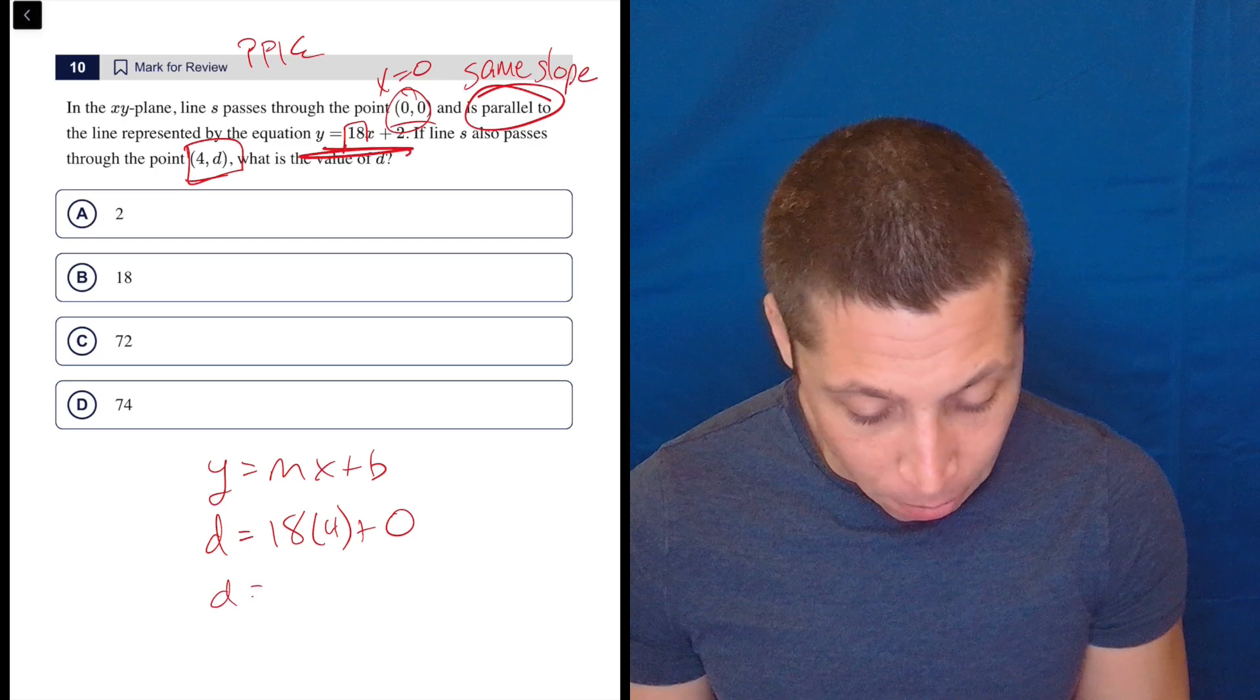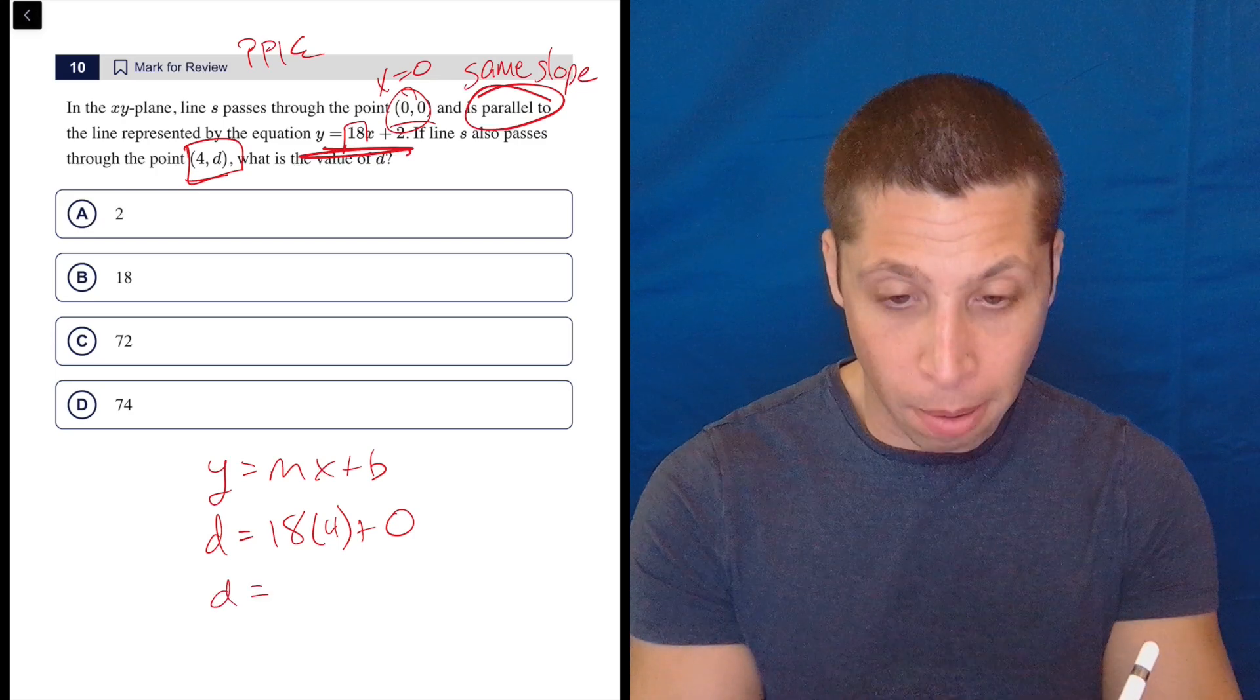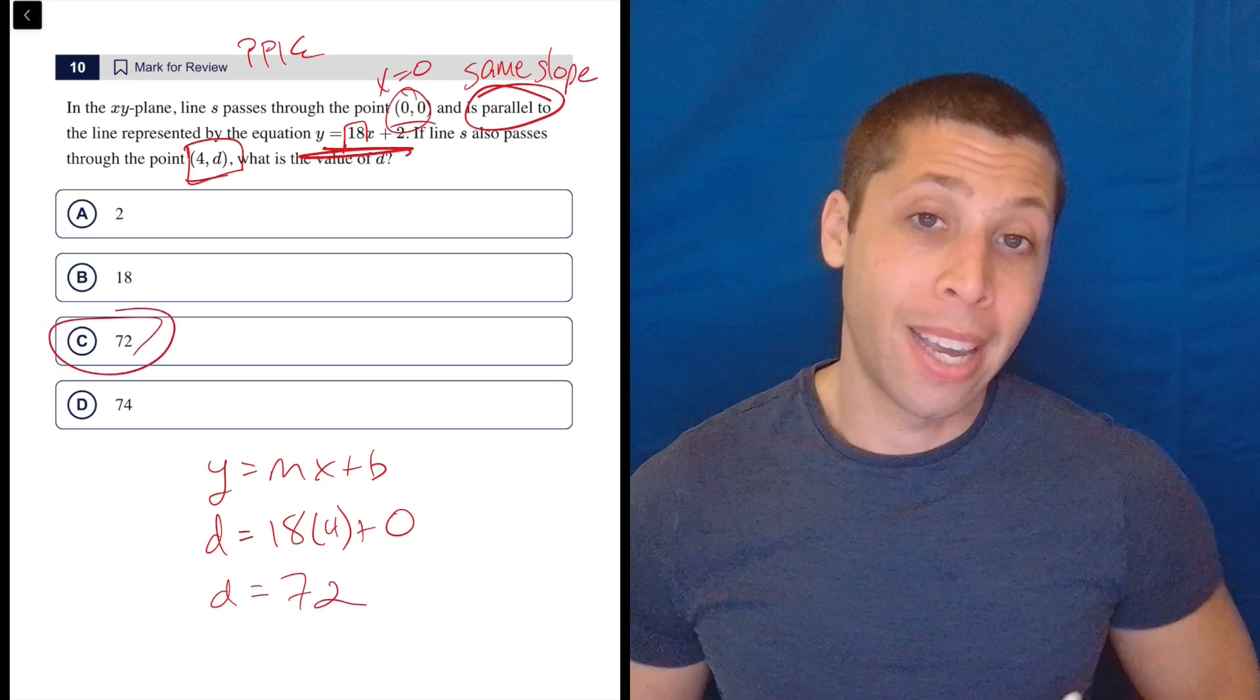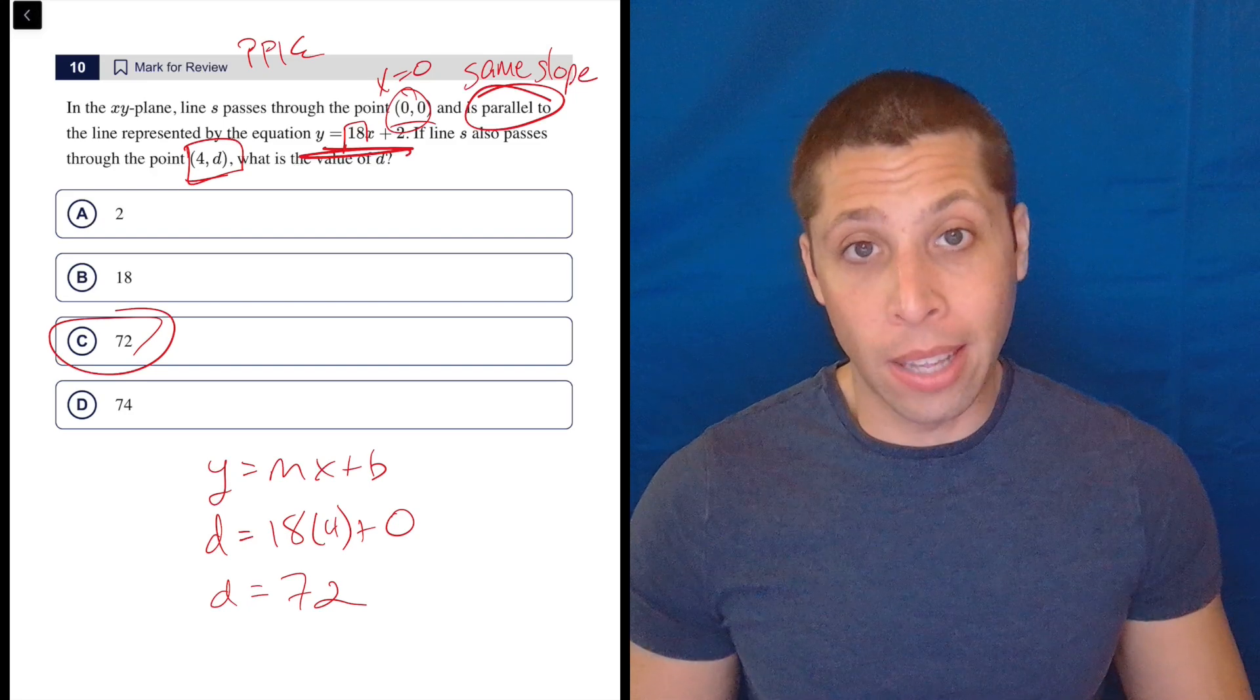What is 18 times 4? I don't know, I'm assuming 74. But let's double-check on the calculator. 18 times 4 is 72. Wow, good thing I didn't do that in my head. That's why we go to the calculator. It takes two more seconds. And there you go. That's the answer.